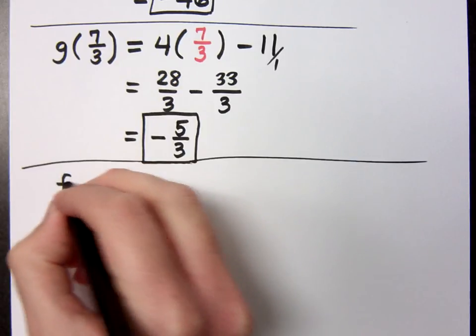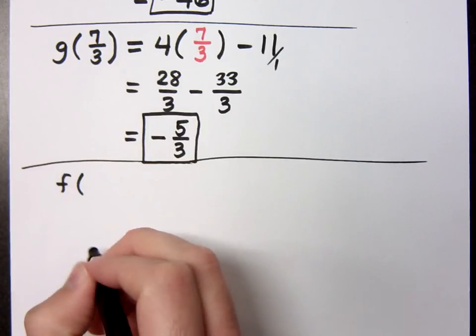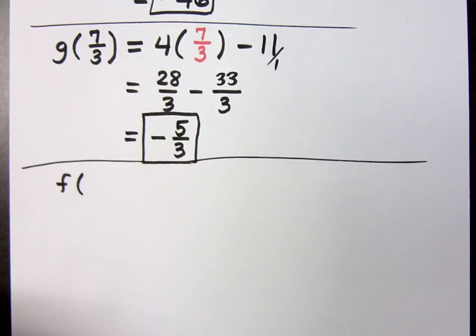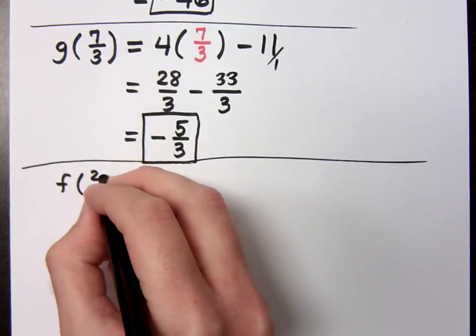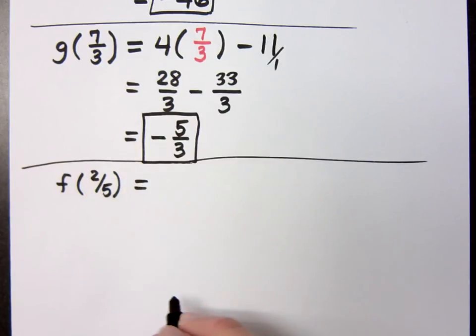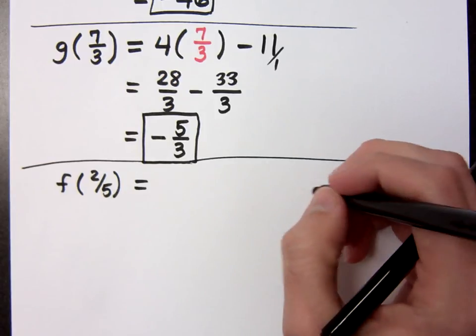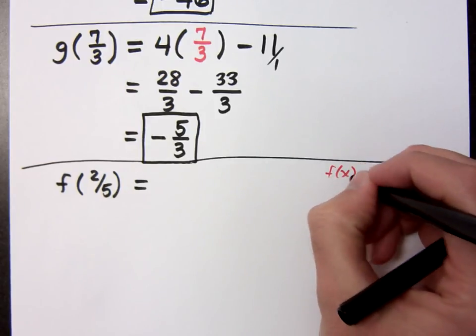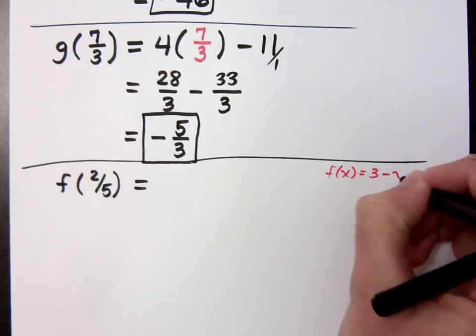All right, what if I say, evaluate F of, I know you guys like fractions, so you were just talking about that. F of 2 fifths. Now, keep in mind, you may want to make a little note here since it's kind of off the page, but F of X is 3 minus X squared.